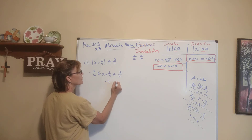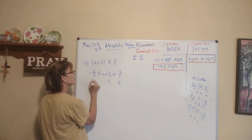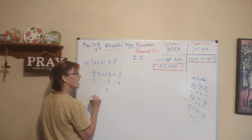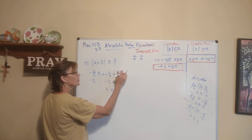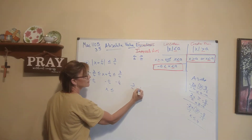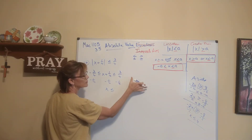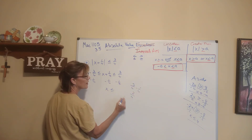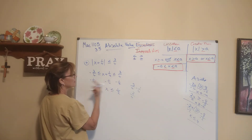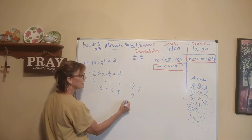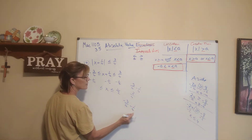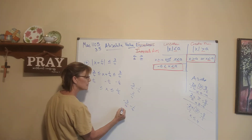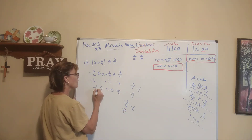Subtract 1 fourth from all three places. In the middle, 1 fourth minus 1 fourth is 0, so we just get x. On the right, 3 fourths minus 1 fourth — common denominator, combine numerators: 3 minus 1 is 2 over 4, which simplifies to 1 half. On the left, negative 3 fourths minus 1 fourth — combine numerators: negative 3 minus 1 is negative 4 over 4, or negative 1.